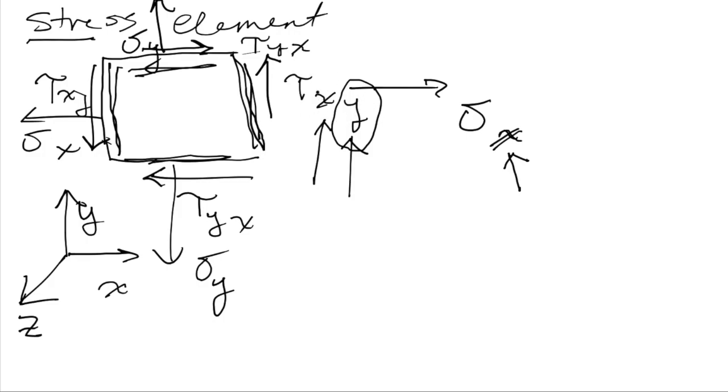So if you look at this guy, this guy is acting on the positive x face and acting in the positive y direction, so this would be positive. This guy down here, tau yx, is acting on the negative y face but in the negative x direction, so it's positive. Two minus signs here make a positive. And likewise for tau xy on this face, it's acting on the negative x face in the negative y direction, so it's a positive shear.